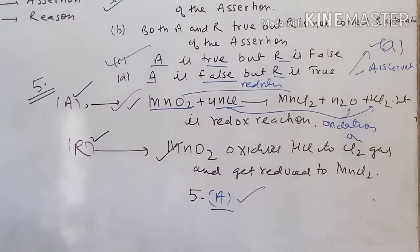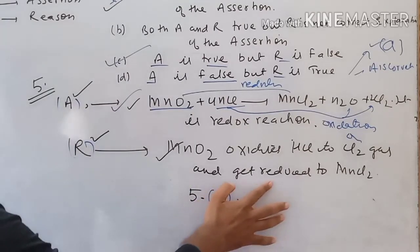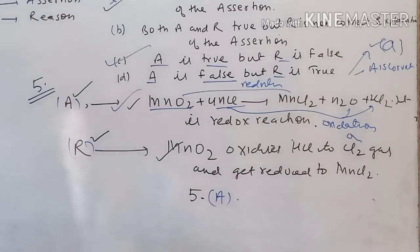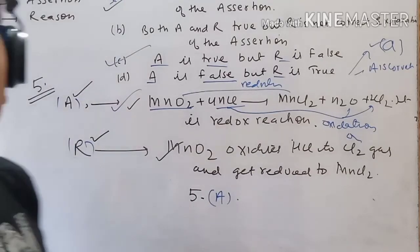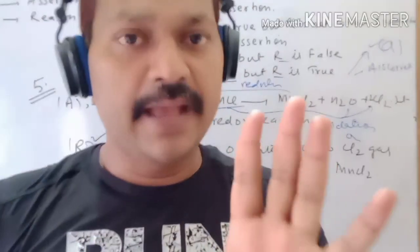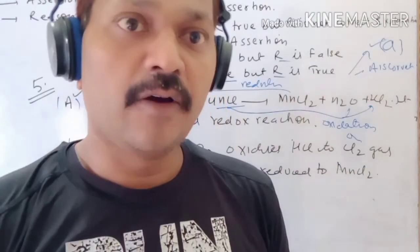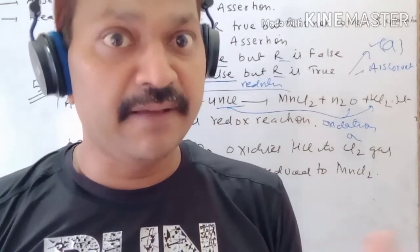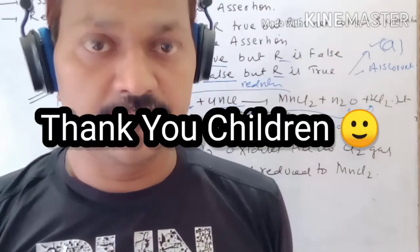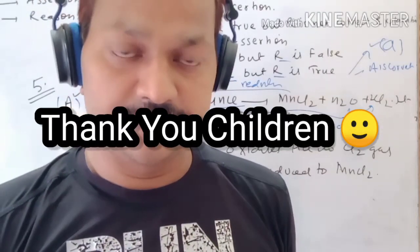In this video we have covered five Assertion-Reason type MCQ questions from the chapter Chemical Equations and Reactions. In the next video we will take up more questions from the next chapter. Thank you children, goodbye, see you again.